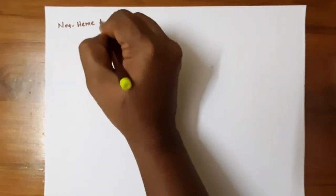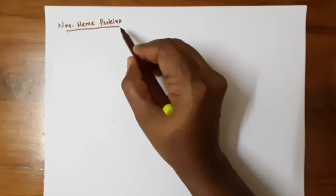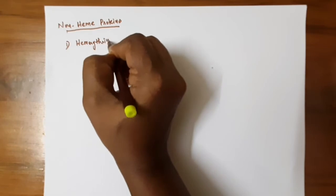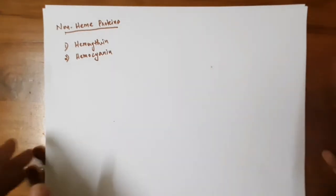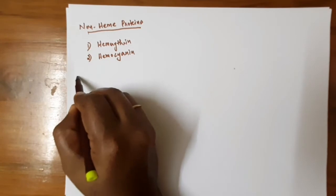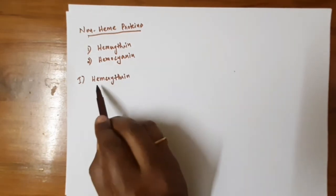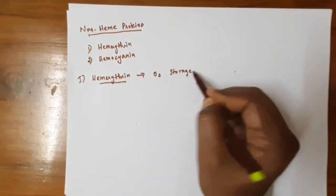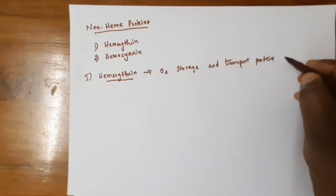Non-heme proteins — from the name itself, we can say that these proteins do not contain the heme prosthetic group. Examples of non-heme proteins are: first, hemerythrin, and second, hemocyanin. Hemerythrin is an oxygen storage and transport protein found in marine invertebrates.